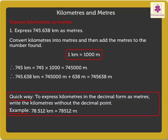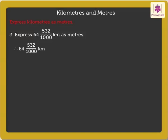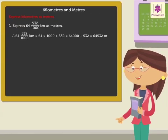Now, let's solve one more example. Express 64 and 532 upon 1000 KILOMETERS as METERS. Here, 64 and 532 upon 1000 KILOMETERS is equal to 64,000 plus 532, which is equal to 64,532 METERS. Kids, now try solving a few examples on your own to understand it in a better way.